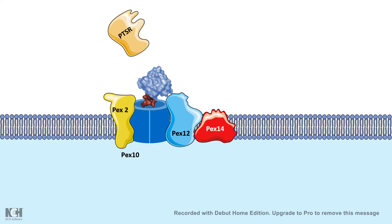This is how proteins important for normal peroxisomal physiology get inside the peroxisome. If these translocon channels are not functioning properly, there can be multiple mutations in the translocon components that give rise to severe physiological disorders. This highlights how critical protein translocation into the peroxisome truly is.